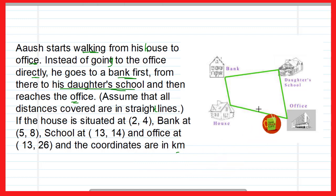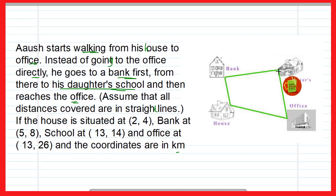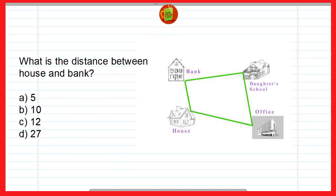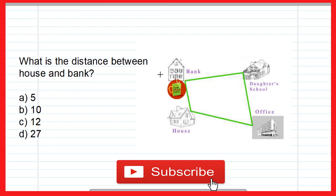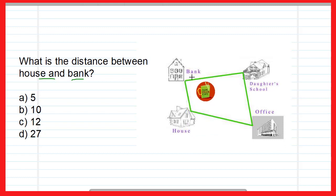So Ayush starts walking from his house and first goes to the bank, then from the bank he goes to his daughter's school, and then from the daughter's school he reaches the office. You have to find the answers to the questions asked below. The first question is: what is the distance between the house and the bank?